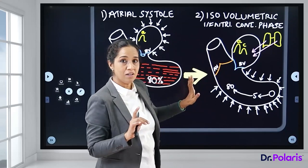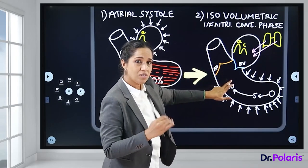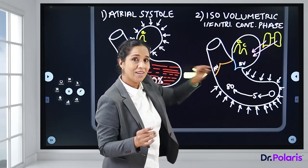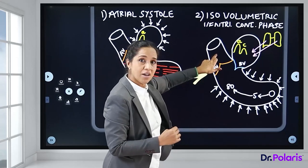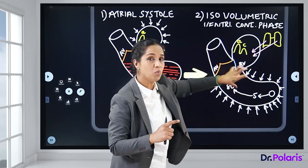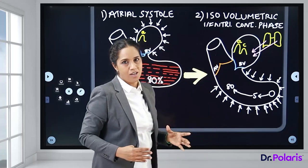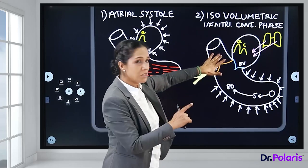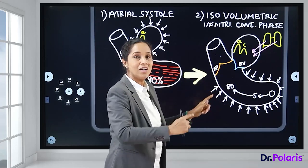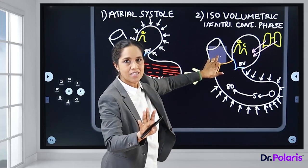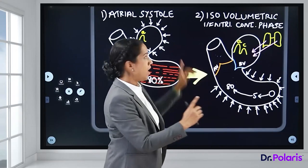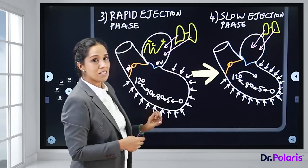In the aorta during this phase, ventricular pressure must exceed aortic pressure (approximately 80 mmHg) before the aortic valve can open. The ventricular pressure is continuously increasing as it contracts as a closed chamber — only when it exceeds 80 mmHg will the aortic valve open.